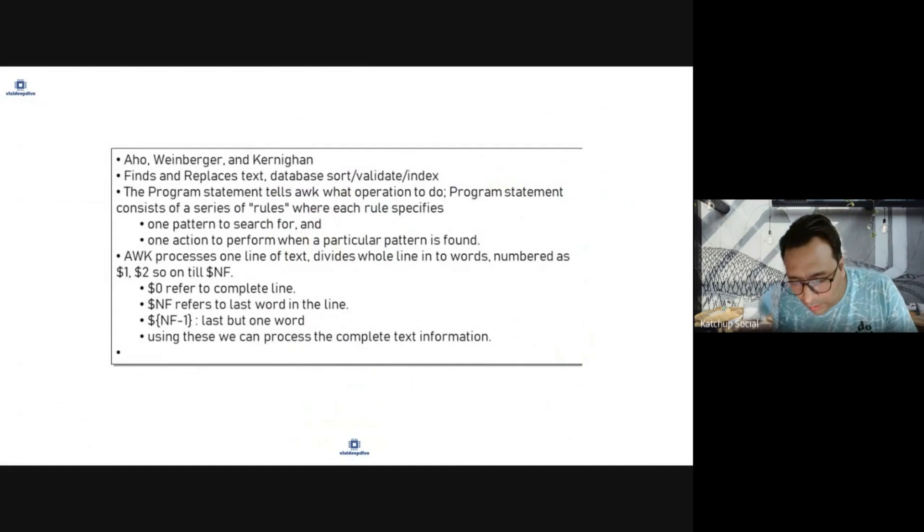awk processes lines of text. $0 refers to complete line, $NF refers to last word in the line, $NF minus one is last minus one. $0 is full line, $1 first word, $2 second word, and so on. How words are determined: by default space creates a word, but if you change hyphen f to comma, then comma can be used to create a separator.